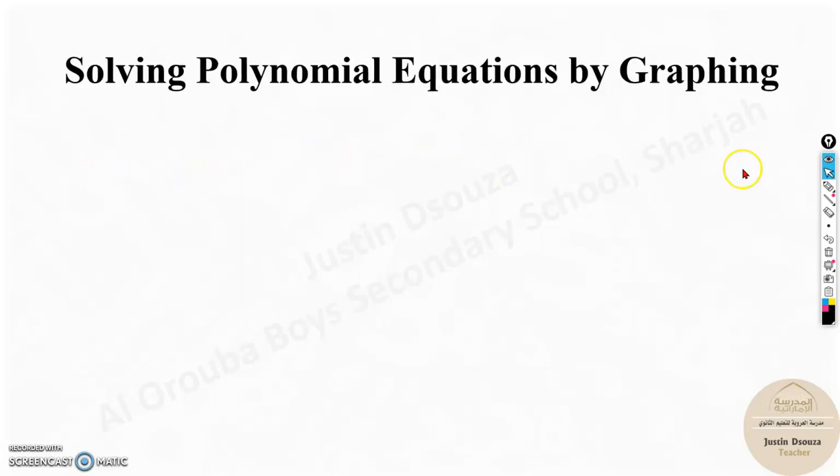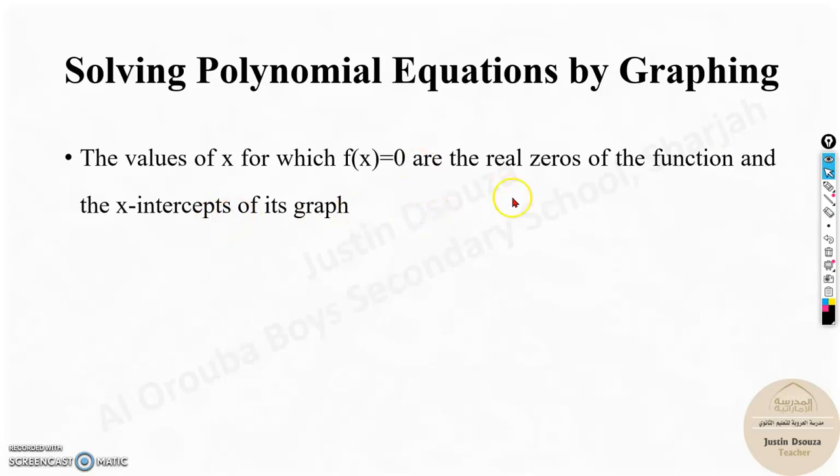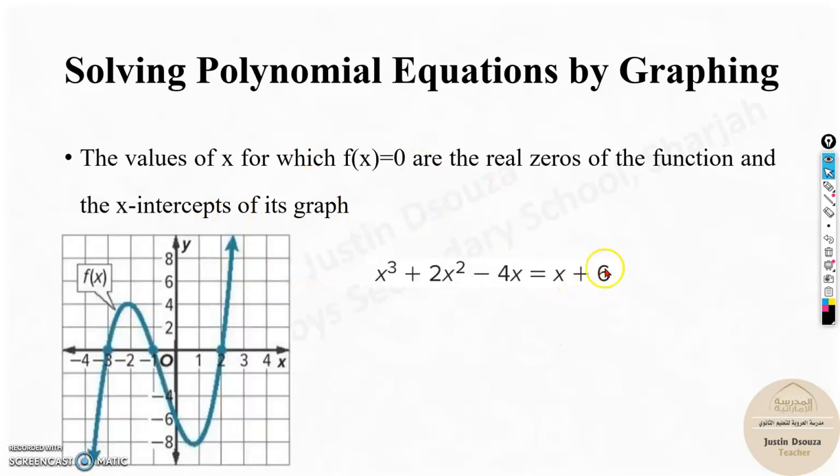Solving polynomial equations by graphing. Let me show you this. This is a polynomial. Whenever there is equal to, equation comes. This is a polynomial equation. How do you solve this? The x-intercept values - that is the solution for the polynomial equation. That x-intercept is also called the solutions.